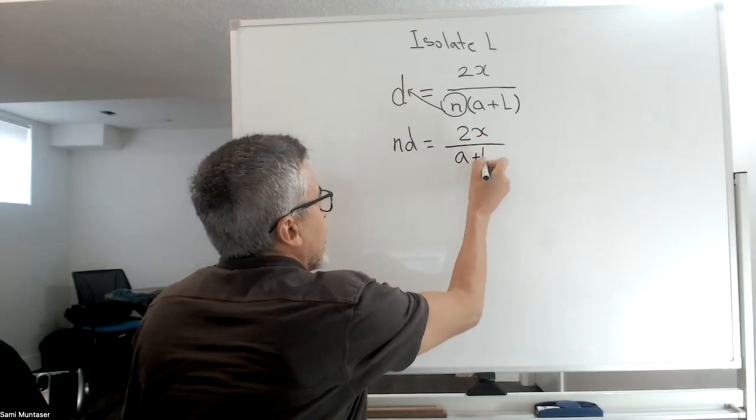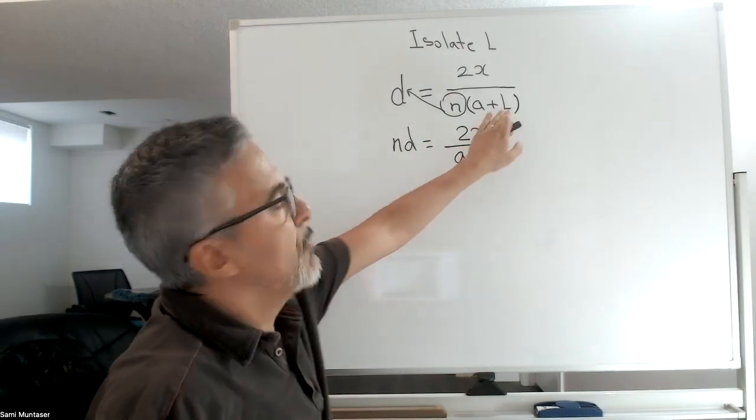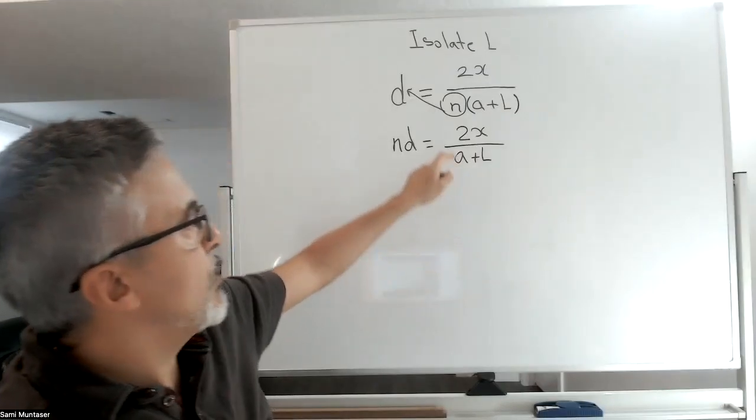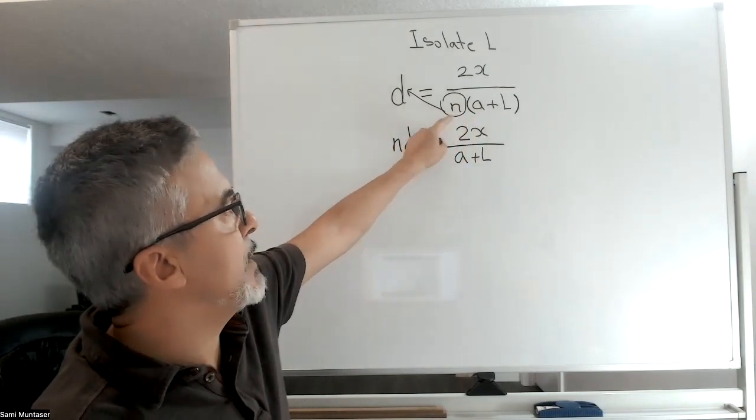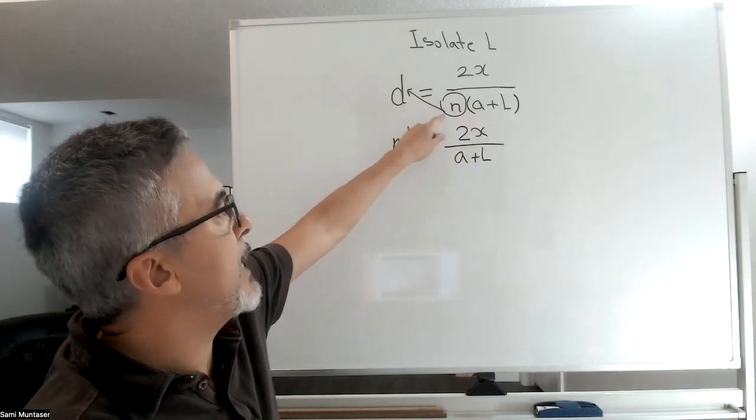We don't need the brackets anymore. The brackets were there just so that if we want to distribute the n inside, that's what the brackets were for. But since I cross multiplied it, I don't need the brackets anymore.